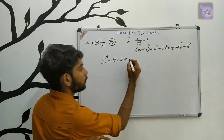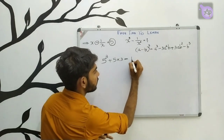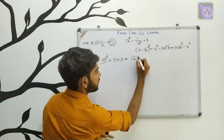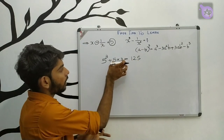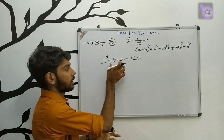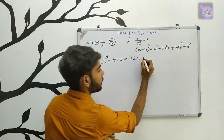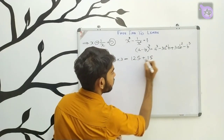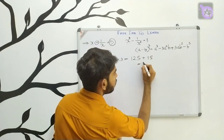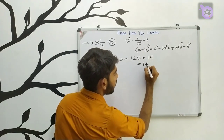5 cubed equals 125, and 3 times 5 equals 15, so x cube minus 1 by x cube equals 125 plus 15 equals 140.